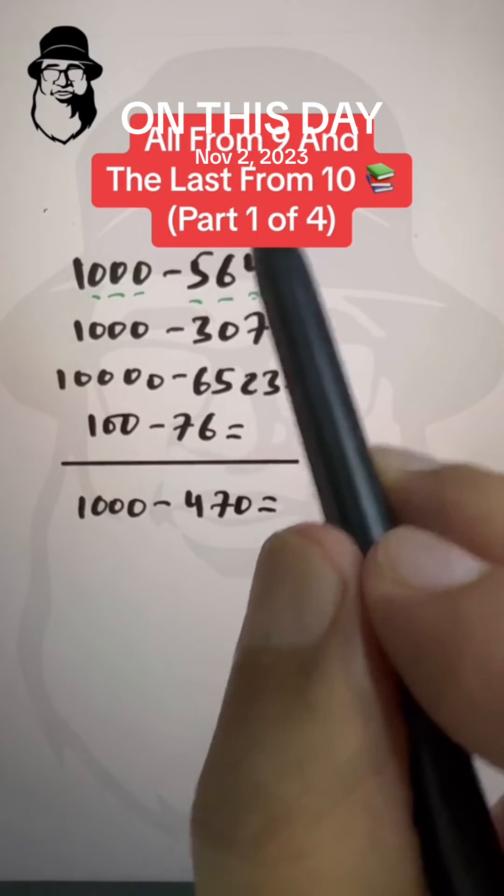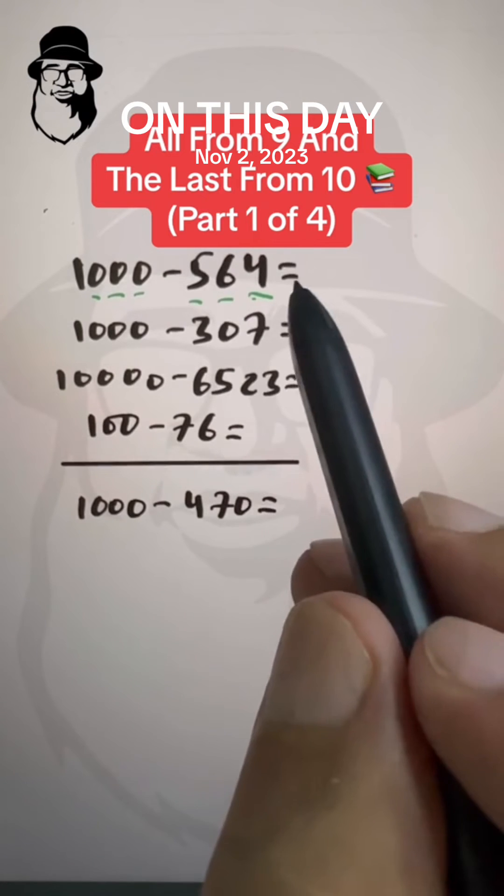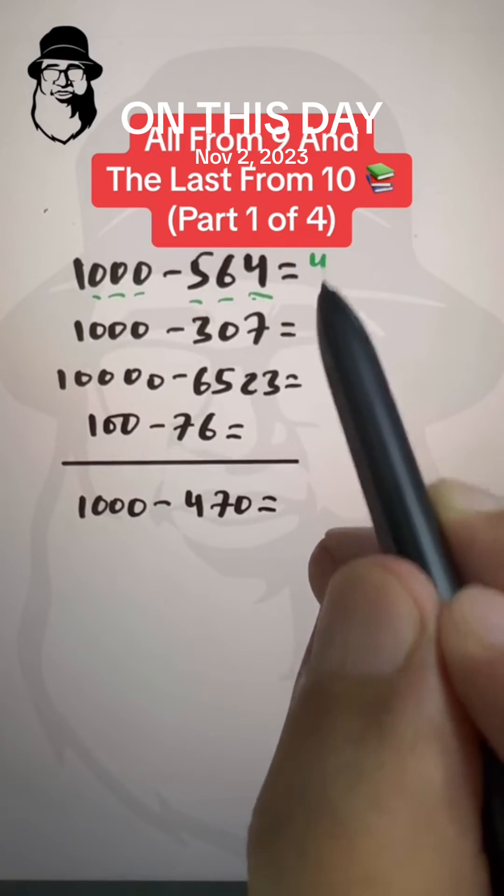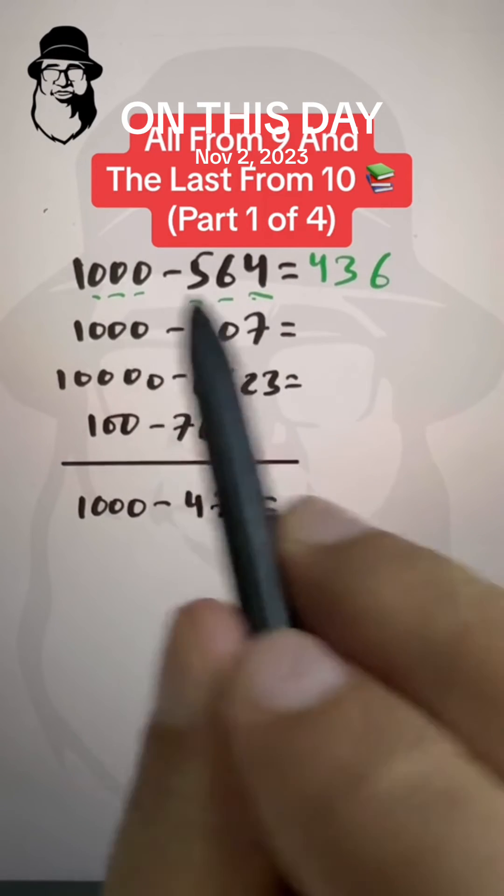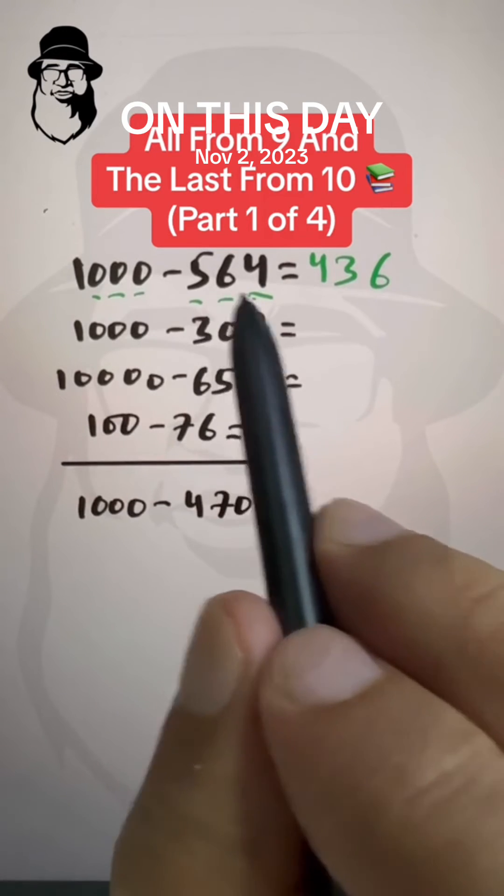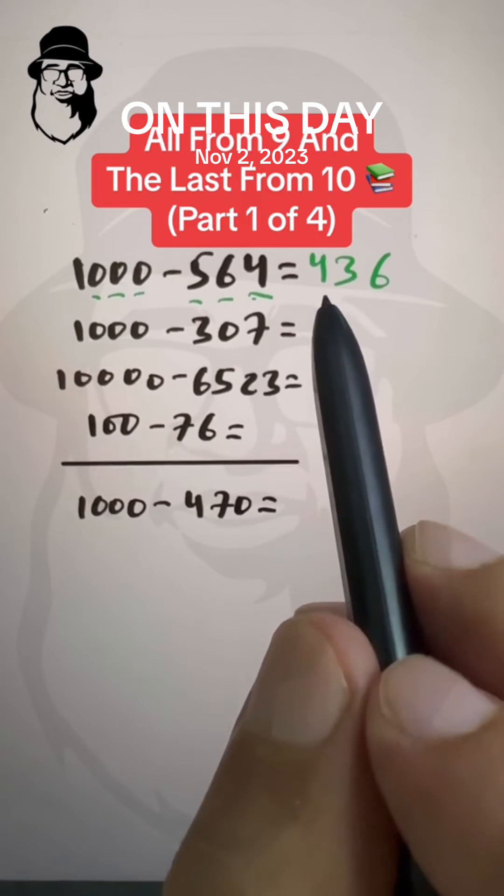So just apply the formula on this number. 5 from 9 is 4, 6 from 9 is 3, and 4 from 10 is 6. And we have this answer: 1,000 minus 564 is 436. Same here.